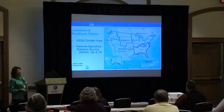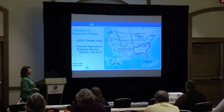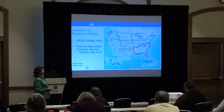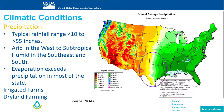When I was looking at this information, there were two different maps, so I called several different agencies. The National Agricultural Statistics Service defines the Southern Plains as including Texas and Oklahoma, while the USDA Climate Hub includes Kansas. Today I'm going to hone in my talk to Oklahoma and Texas.